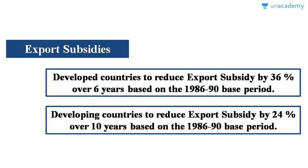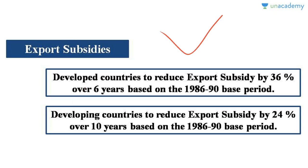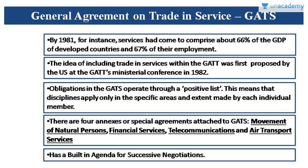The third pillar is export subsidies. Countries often encourage the export of agricultural goods by providing subsidies. When subsidies are provided, production costs fall and prices drop, making exports more competitive. Under the Agreement on Agriculture, export subsidies must be reduced. Developed countries are required to reduce export subsidies by 36% over a period of six years, and developing countries by 24% over a period of 10 years.